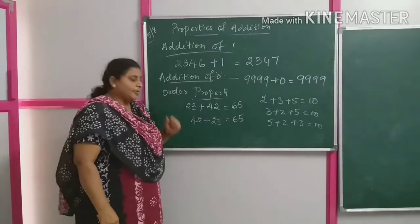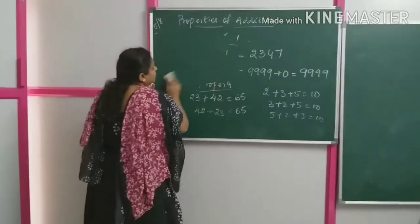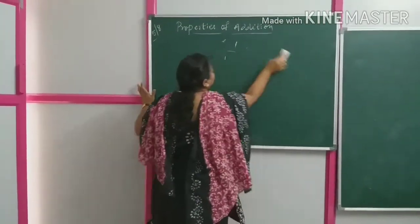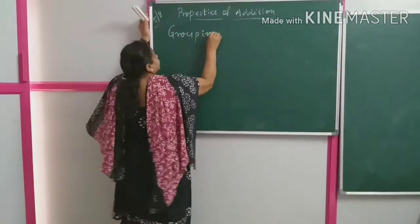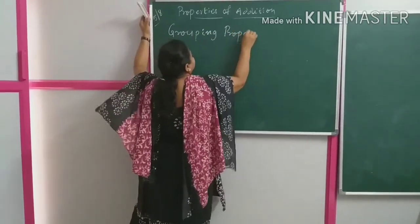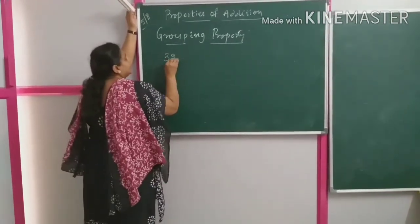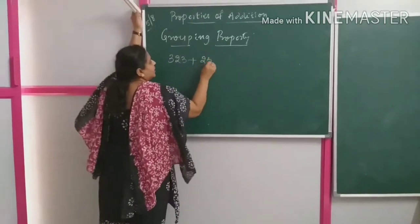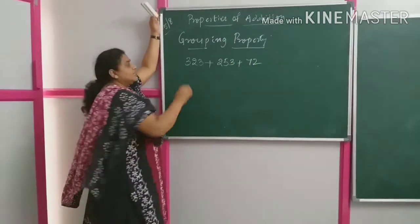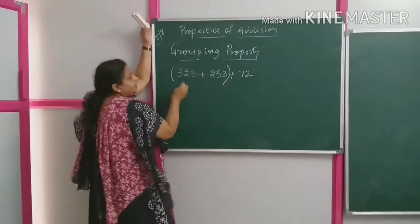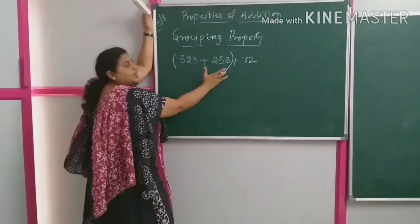The next and last property is the grouping property of addition. In the grouping property of addition, we group the numbers and add. Suppose I have 323 plus 253 plus 72. I group two numbers using brackets — I have made the first two numbers, 323 and 253, under one group in brackets.